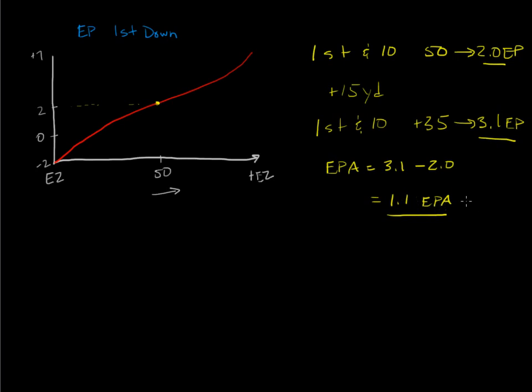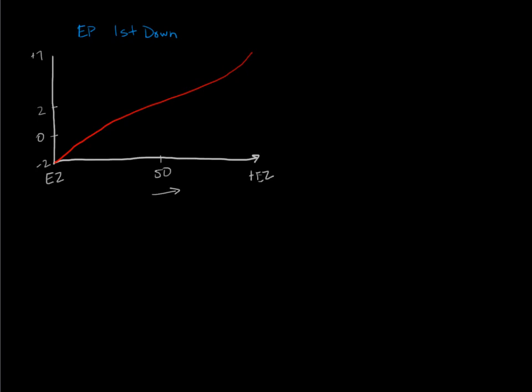That's how we can assess the value of a play. Now we can attribute that to the participants of the play as well. If that was a pass catch, we can assign those points to the wide receiver, to the quarterback, to the offensive line. If this was a running play, to the running back and the other participants. So this is a good universal currency for comparing all different kinds of things in football: penalties, gains, losses, turnovers. That's what we'll talk about in the next example, how to value a turnover.